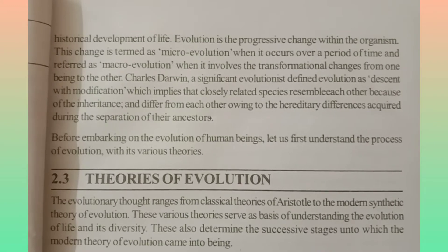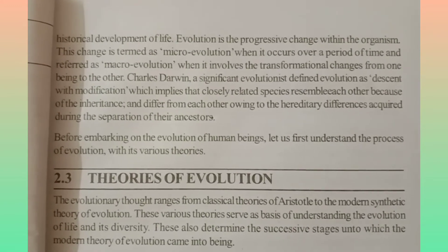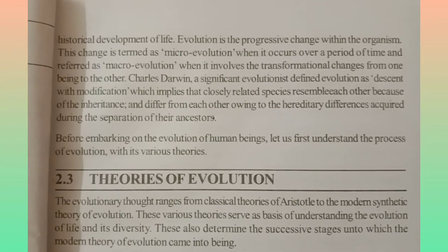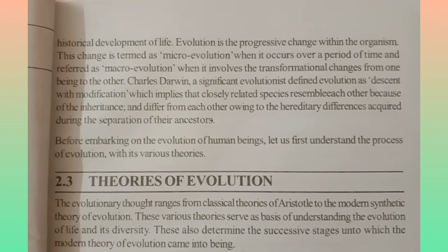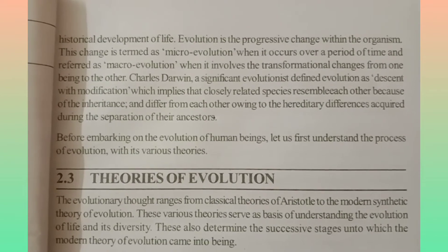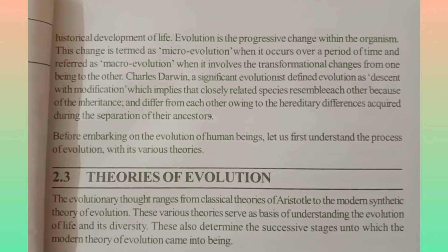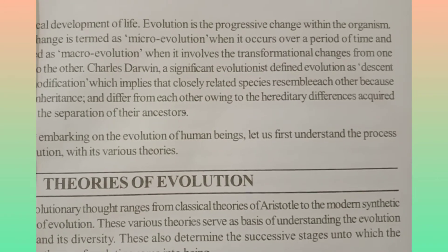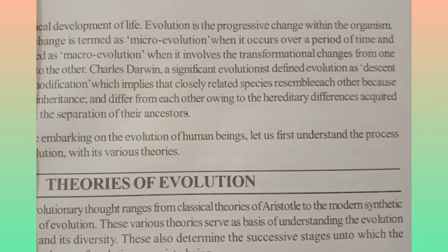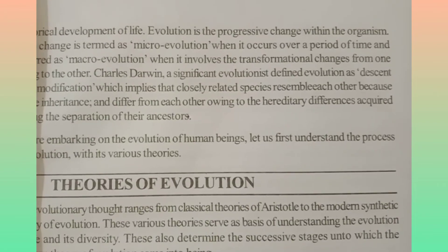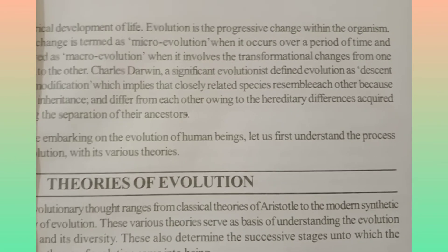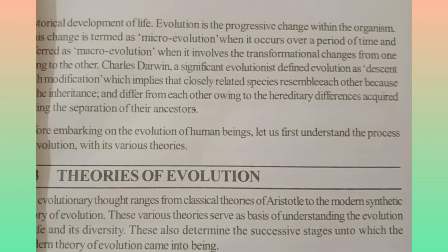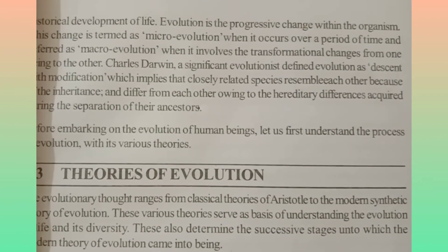Charles Darwin is a significant evolutionist who defined evolution as descent-with-modification. This implies that closely related species resemble each other because of inheritance, yet they also differ from each other.